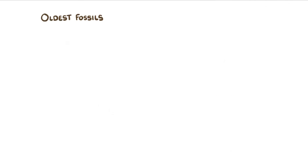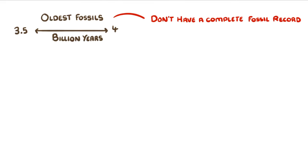The oldest fossils that we've found so far are between three and a half to four billion years old, but we don't have a complete fossil record. There are currently big periods where we don't really know what happened.